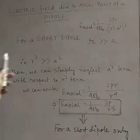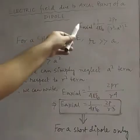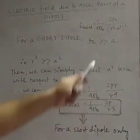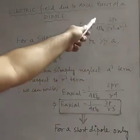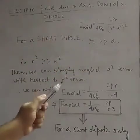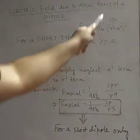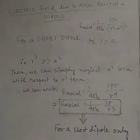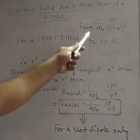The expression for the electric field due to an axial point is (1/4πε₀) × (2pr) / (r² - a²)², where p is the dipole moment, r is the distance, and a is the half-length of the dipole.